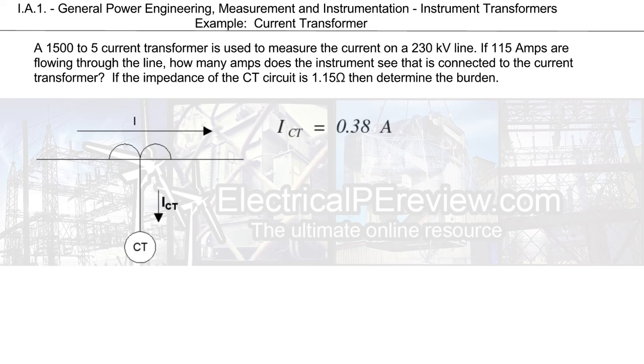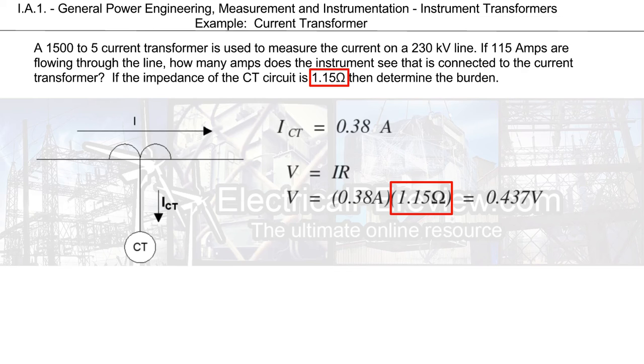Okay, now that we've got our CT amps, we're going to use this information to find the burden. Using standard Ohm's law, we can calculate the voltage seen at our CT as 0.437 volts. Our Ohms here is given to us in the problem statement as the impedance of the CT circuit itself.